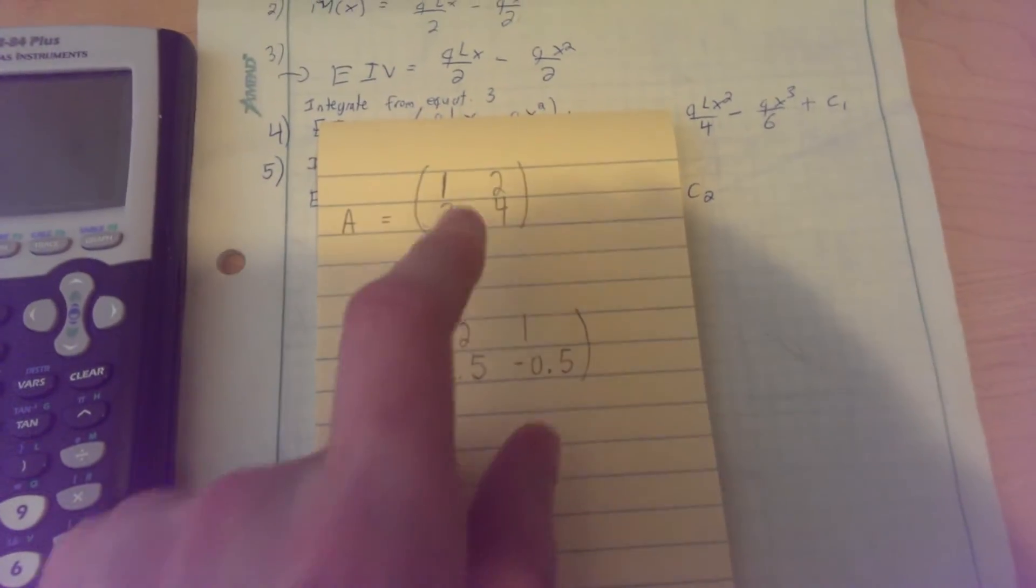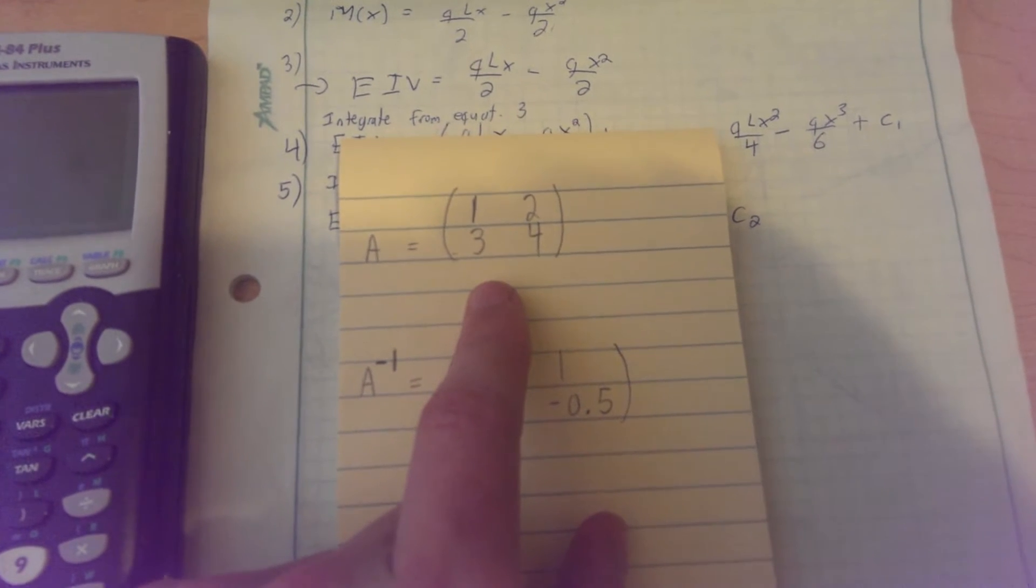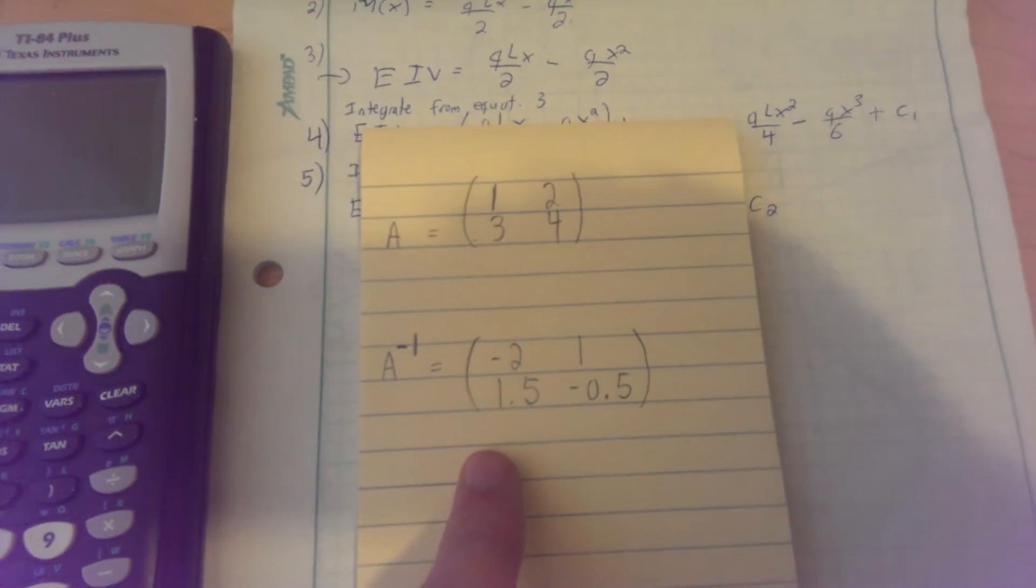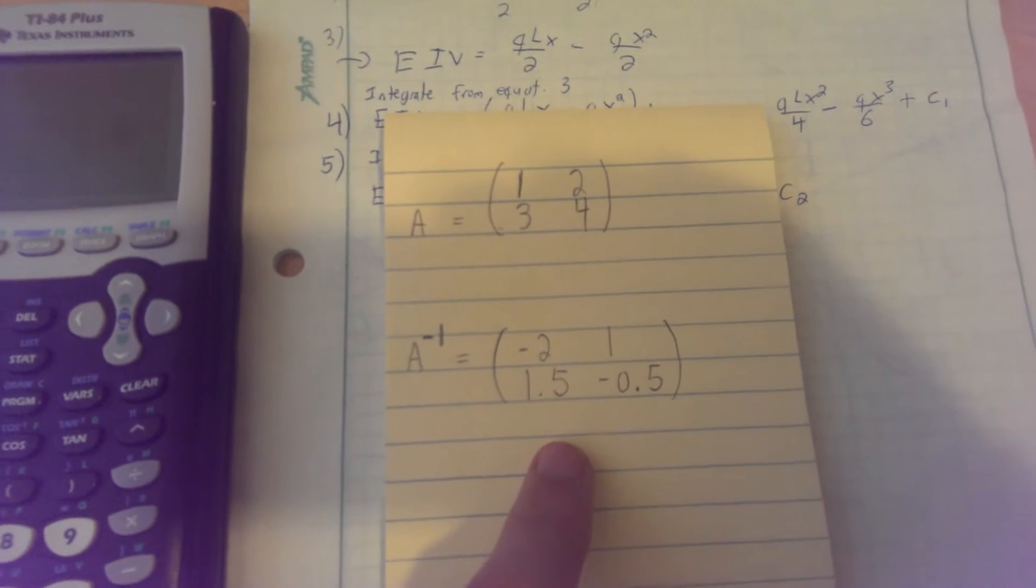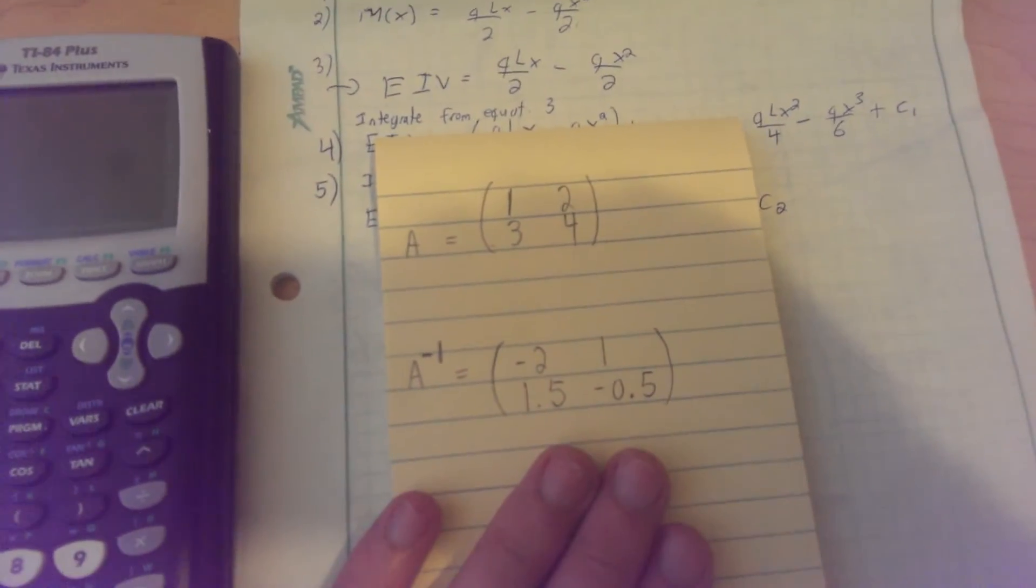Now what I did here was write down the matrix which is A as a 2 by 2: 1, 2, 3, 4, quite simple, and we know the inverse of it is negative 2, 1, 1.5, and negative 0.5. I'm going to show you how to find this value using the calculator.